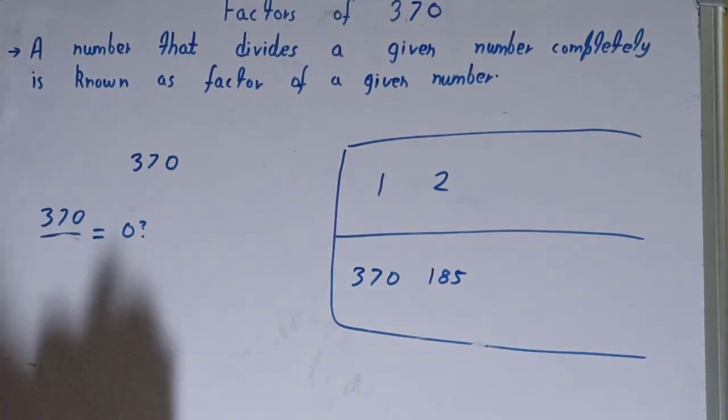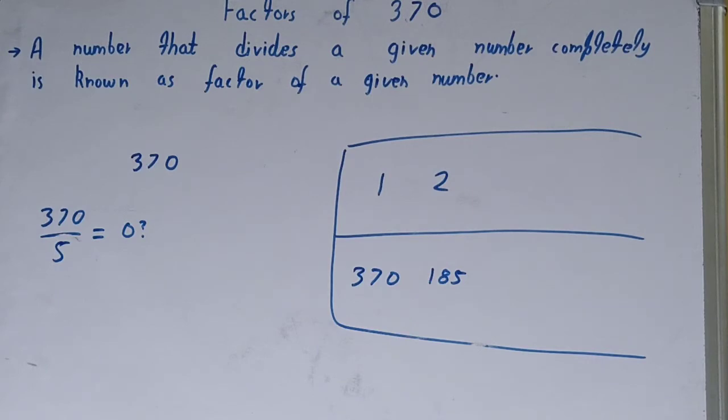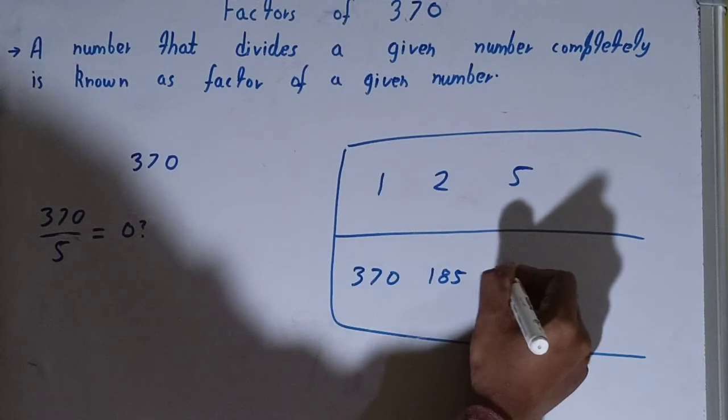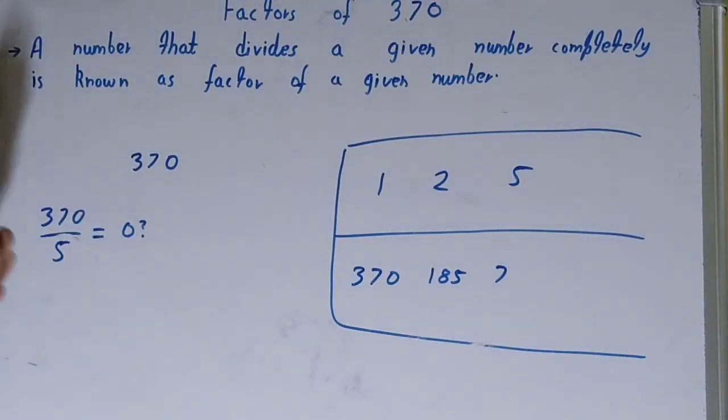Let's check with 5. The last digit is 0, so yes, it is divisible by 5. 5 into 70, 35... 5 into 70, 35... 20. So it will be 74 times. So 5 is a factor and 74 will also be the factor.